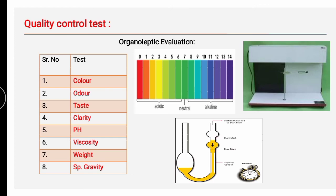Quality control tests include various organoleptic evaluations: color, odor, taste, and clarity. Color and odor are based on the flavor added, and taste is assessed subjectively. Clarity is checked by examination against a light background and dark background. Other quality control parameters include pH, viscosity, weight, and specific gravity. These are the standard quality control parameters for liquid preparations.